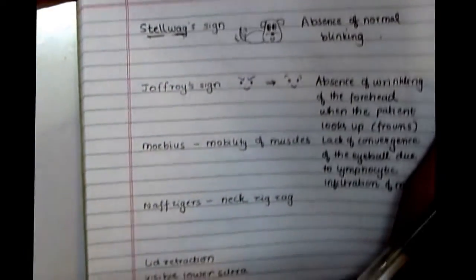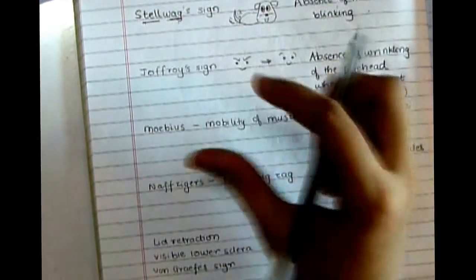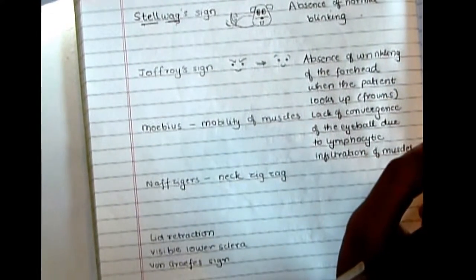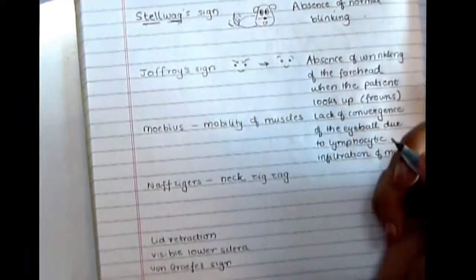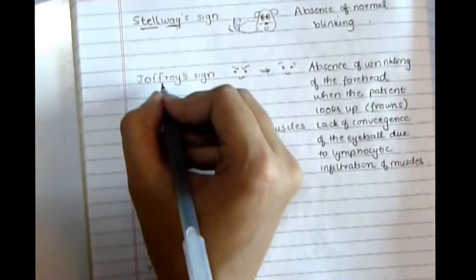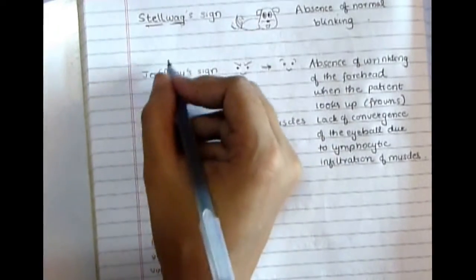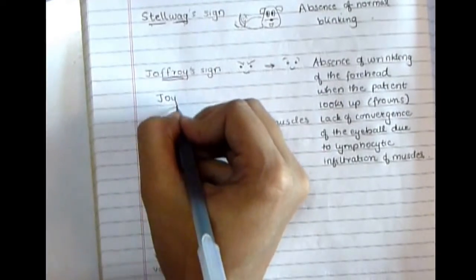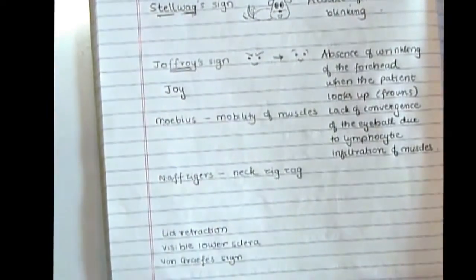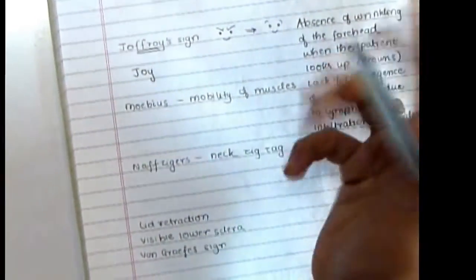The second sign is the Joffroy sign. When you ask the patient to look up, there is absence of wrinkling of the forehead — no frowning. If you cut out the 'frow' from 'frown,' you get 'joy' or happy. So without frowning, you become joyful — 'joy-froy' — that's how I remember it.